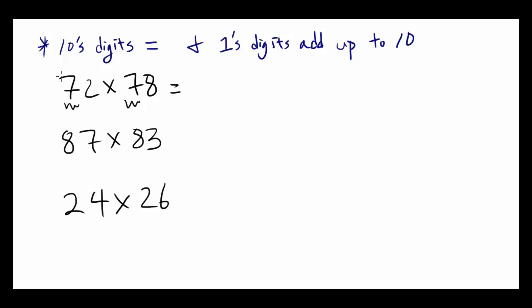How you're going to do it? You start by adding 1 to the 10th digit, in this case 7, and that's going to give you 8. And you're going to multiply 8 and 7 together, and that's going to give you 56. And then you're going to multiply the ones digit, 2 and 8, 16, and you're going to put it at the end, and that's going to be your answer.